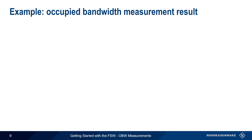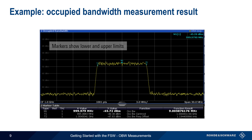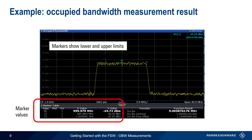Now let's look at an example of an occupied bandwidth measurement. In the graphical view, markers T1 and T2 are used to show the lower and upper limits of the occupied bandwidth. At the bottom of the screen are the numeric results for these markers. The occupied bandwidth is also given numerically — here the measured value is just over 9 MHz. In addition, the results include the centroid frequency, that is the center frequency of the occupied bandwidth, as well as the frequency offset of the centroid from the nominal center frequency.